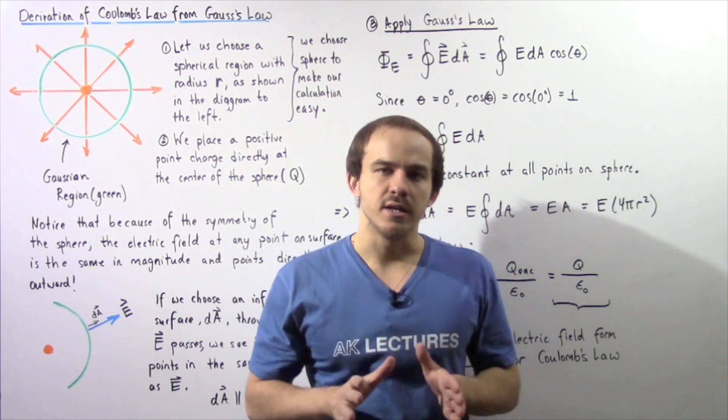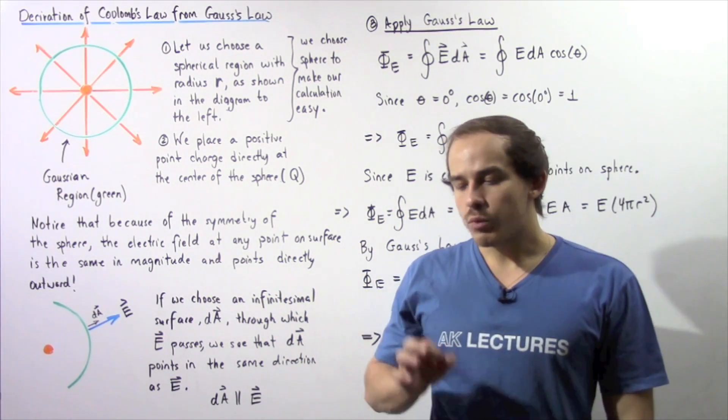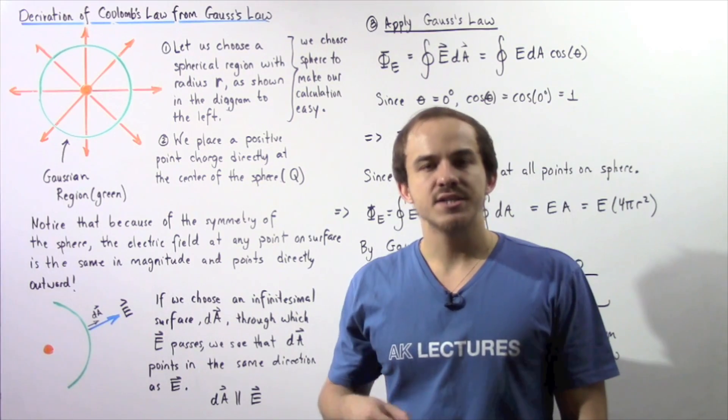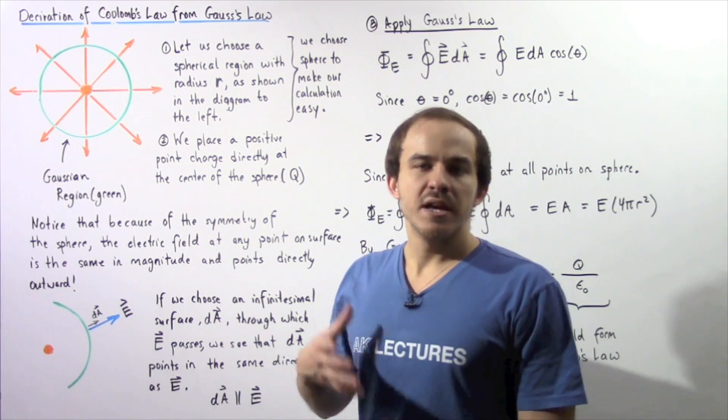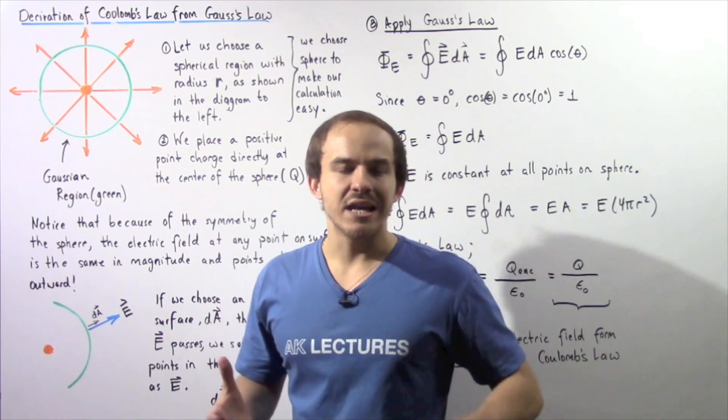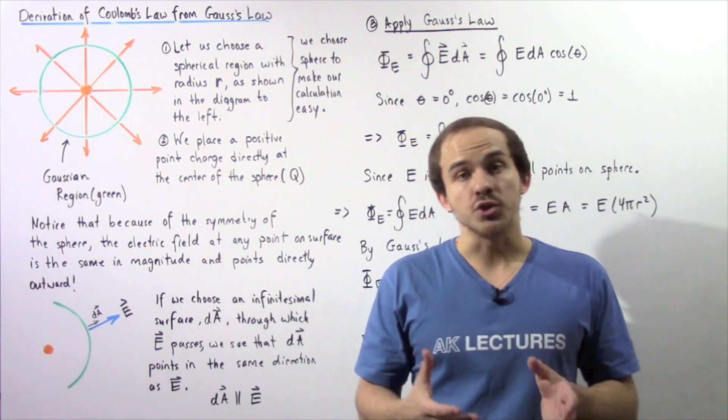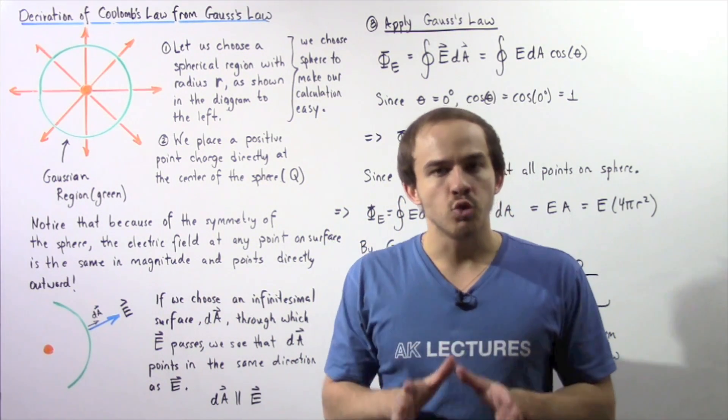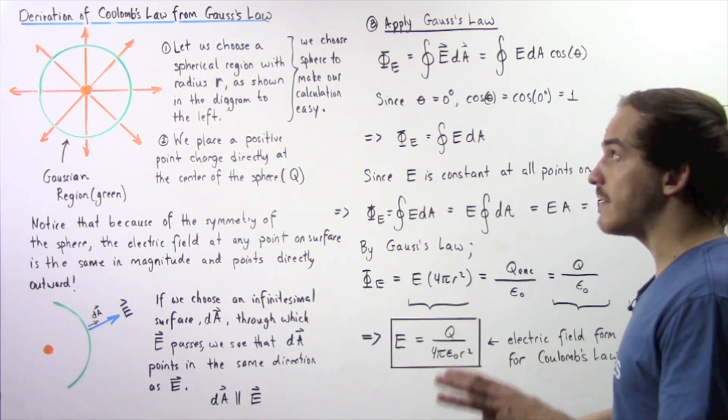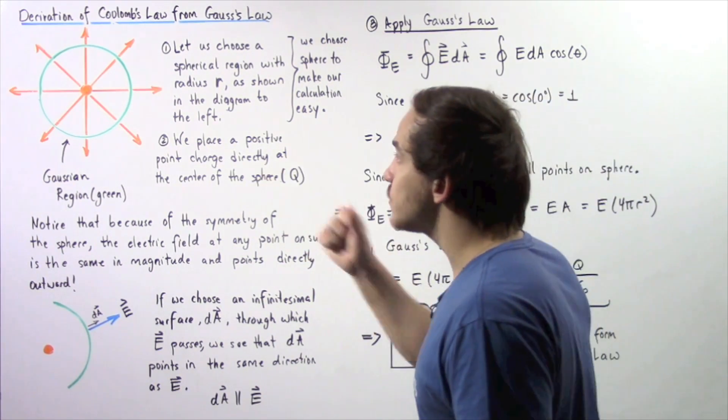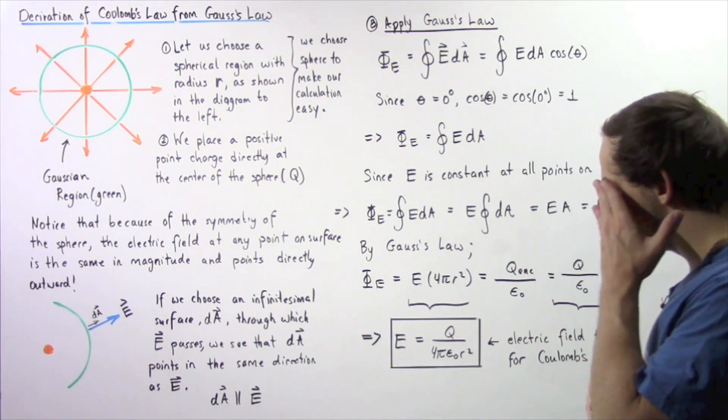In the previous lecture, we discussed Gauss's law, and we said that Gauss's law is a more general statement of the relationship between electric fields and electric charges. In other words, it's more general than Coulomb's law. In fact, in this lecture, we're going to derive Coulomb's law from Gauss's law, as we'll see in just a moment.